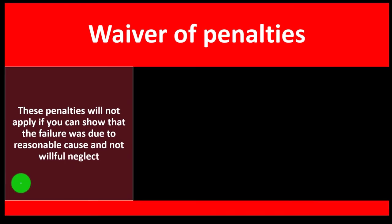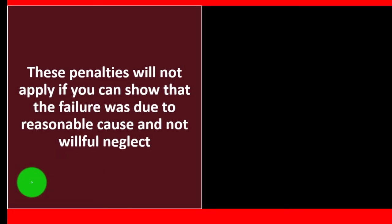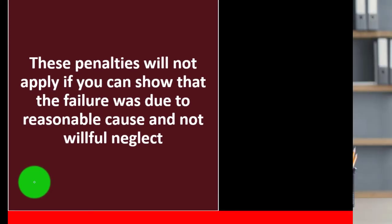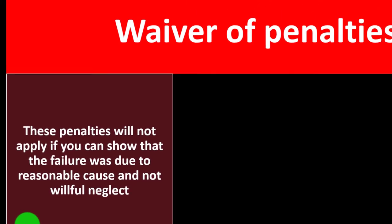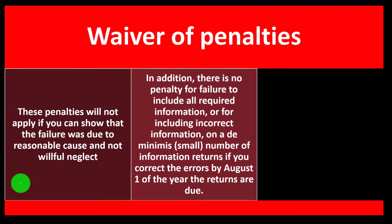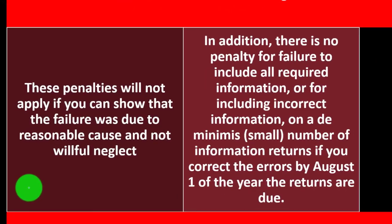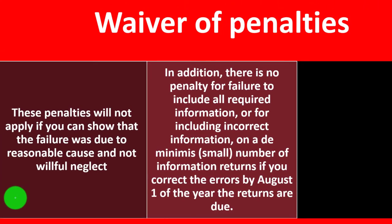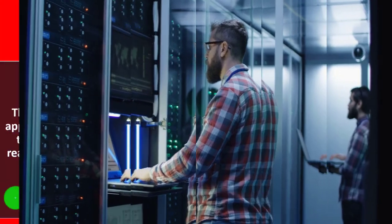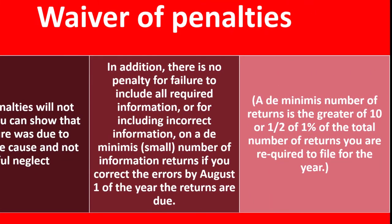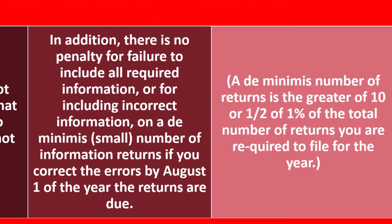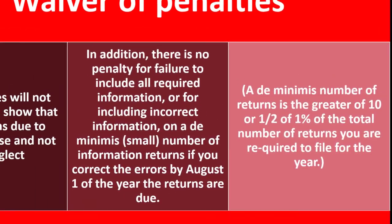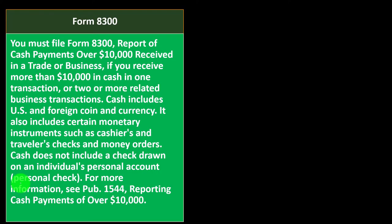Waiver of penalties: these penalties will not apply if you can show that the failure was due to reasonable cause and not willful neglect. In addition, there is no penalty for failure to include all required information or for including incorrect information on a de minimis — small — number of information returns if you correct the errors by August 1st of the year the returns are due. A de minimis number of returns is the greater of 10 or 1.5% of the total number of returns you're required to file for the year.